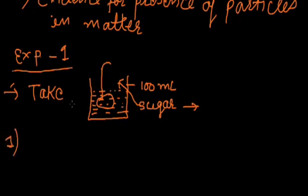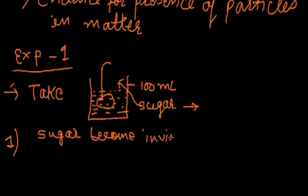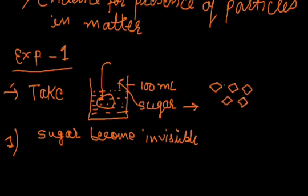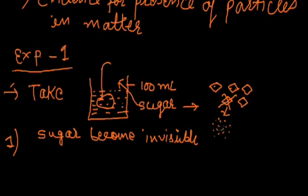After making the solution, we see that sugar particles are not visible to the naked eye — the sugar particles become invisible. This happens because the sugar crystals break up into very small fragments that are too small to see with the naked eye, and these particles distribute homogeneously in the water.